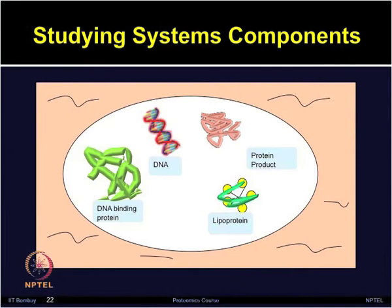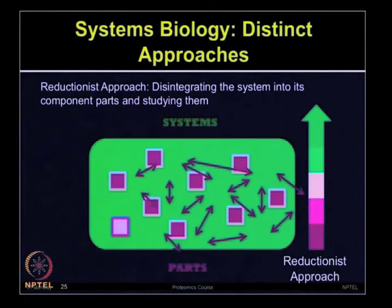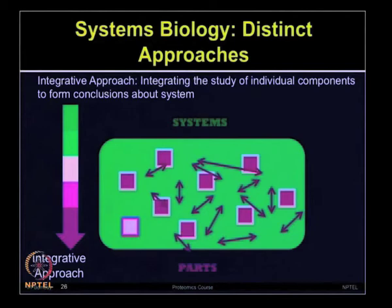Studying systems components is very challenging. Systems biology and biological network modeling aim to understand systems structure and function for better understanding of system properties like robustness, as well as for prediction of system behavior in response to perturbations. The reductionist approach involves disintegrating the system into its component parts and studying them, whereas the integrative approach involves integrating the study of individual components to form conclusions about the system.